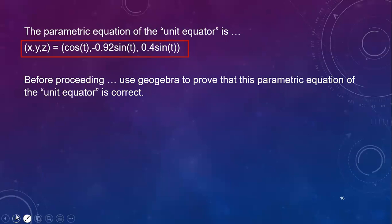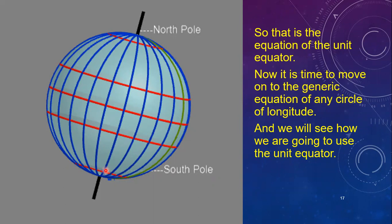We have our equation for the unit equator. Now it's time to move on to the generic equation of any circle of longitude. And we will see how we're going to use the unit equator. If you lived on this green one, within the course of 24 hours, your circle of longitude will occupy every circle of longitude on the surface of the Earth, because the Earth is spinning. Or another way to think of it is, let's say it's an exact instant in time. There are so many circles of longitude there. I've drawn the 24 common ones here, or there are of course an infinite number in between. Either way, we're going to use our unit equator in order to find the equation of any one of these circles of longitude.